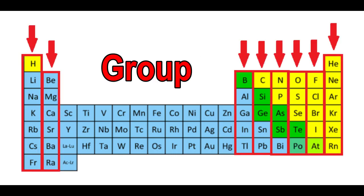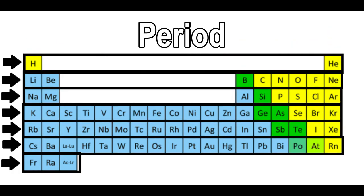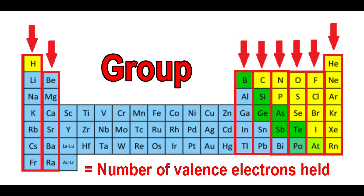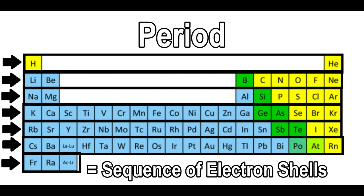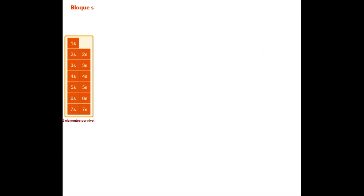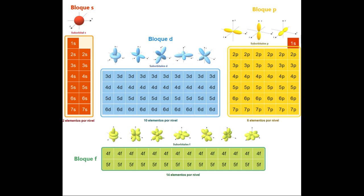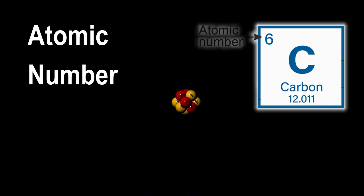The group and period are denoted in columns and rows. The group indicates the valence electrons that are held while the period shows the sequence of their electron shells. It may be divided into blocks S, P, D, F based on the atomic orbitals in which electrons may be.